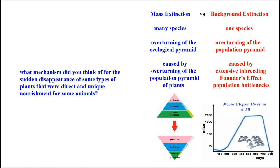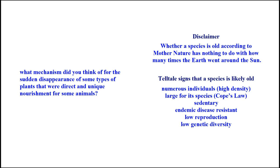There's the example of John Calhoun's mouse utopian universe — he ran many experiments and they all ended in extinction. What happens is you have a group of animals that expand demographically from very few grandfathers. And here's a disclaimer for when we talk about the aging of a species. Whether a species is old according to Mother Nature has nothing to do with how many times the Earth went around the sun. Here are the telltale signs that a species is likely old — and you'll note that all of these refer to man. Man is an old species.